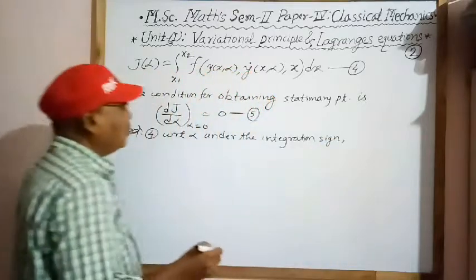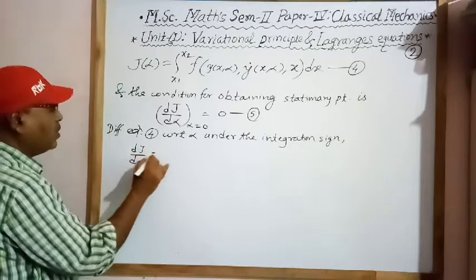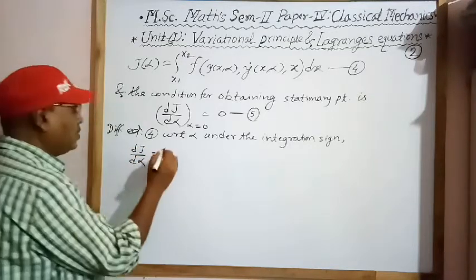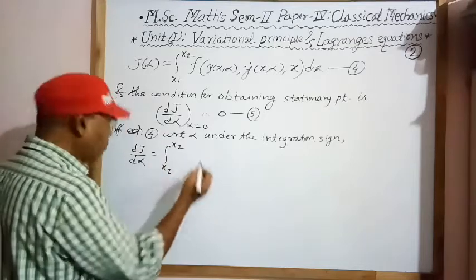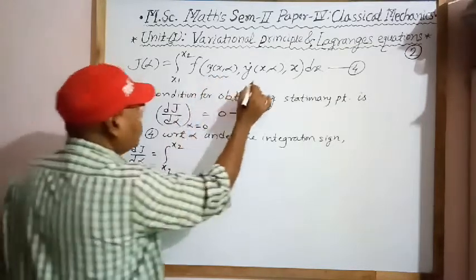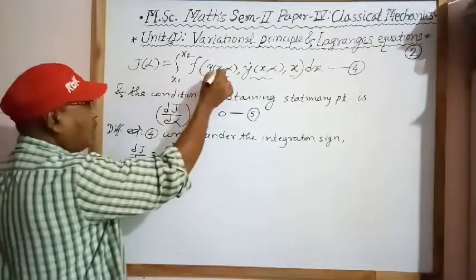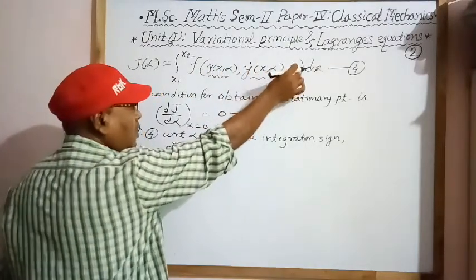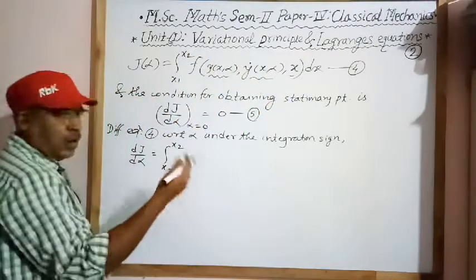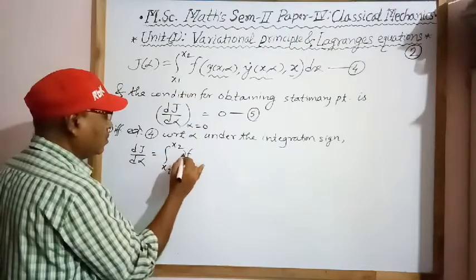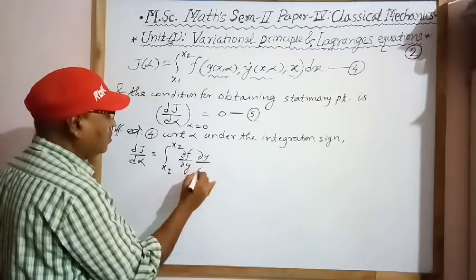According to Leibniz's theorem, differentiating equation 4 with respect to α under the integration sign gives: dJ/dα = ∫[x1 to x2] of the derivative of f. Since f depends on y(x,α) and y-dot(x,α), but x does not contain α, the third variable contributes zero. We differentiate only the first and second terms by the chain rule: the first gives (∂f/∂y)·(∂y/∂α), and the second gives (∂f/∂y-dot)·(∂y-dot/∂α).